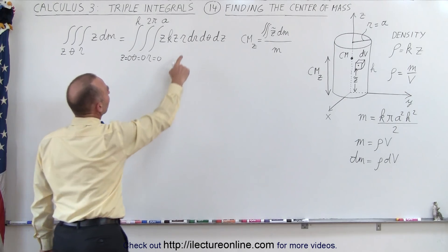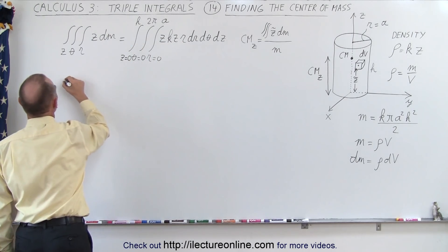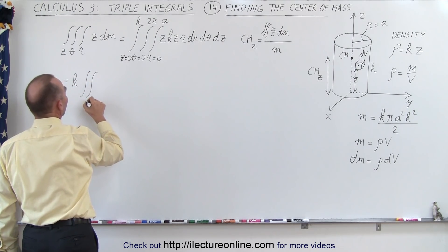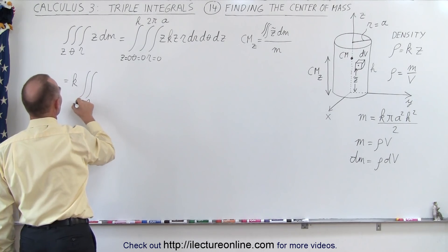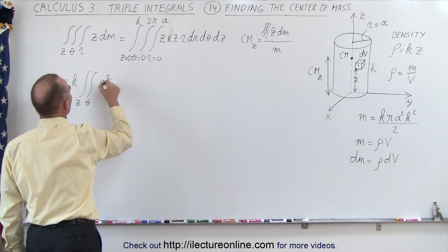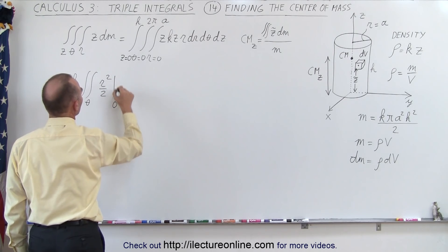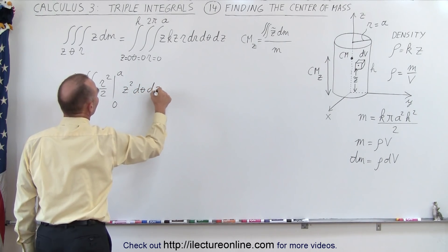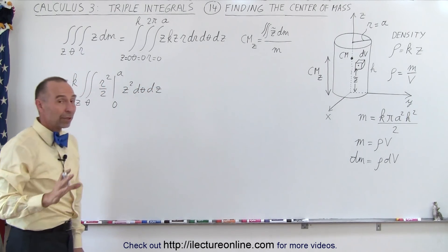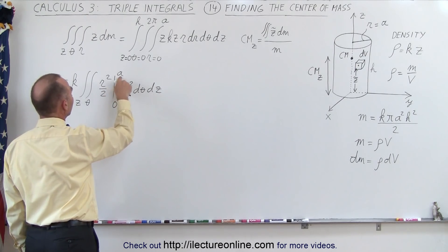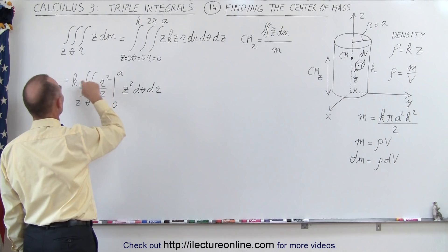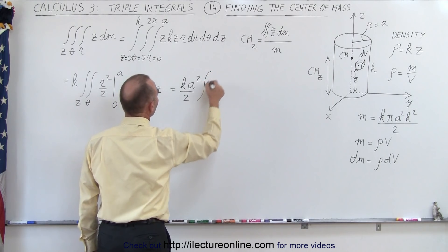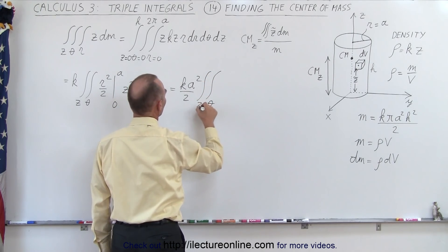We start by integrating r dr and pull k out of the integral. That gives k times the double integral over theta and z. Integrating r gives r squared over 2, evaluated from 0 to a. Plugging in 0 gives nothing; plugging in a gives a squared over 2. We pull that out, giving k a squared over 2, times the double integral of z squared d-theta dz.